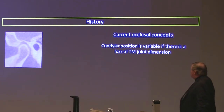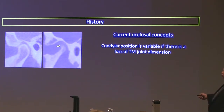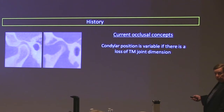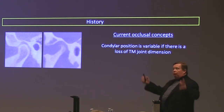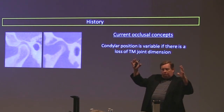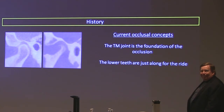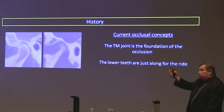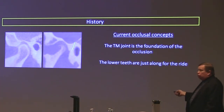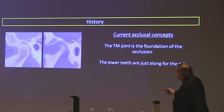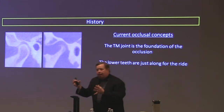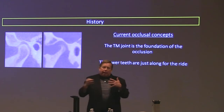In current occlusal concepts, condylar position is going to be variable if there's a loss of TM joint dimension. Two different practitioners could seat the joint very well and get different condylar positions based on the space available. The TM joint is the foundation of occlusion — the lower teeth are just along for the ride, ending up based on what happens at the hinge position. We're often just looking at tooth position and assuming the joint is normal or adaptive. But when we see that amount of spatial change, it may not hurt, yet it's not adapted from a mechanical or structural perspective.